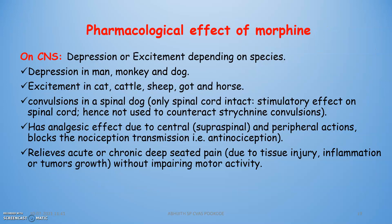Pharmacological effects of morphine on the CNS include depression or excitement depending on the species. Depression is mainly present in man, monkey, and dog, whereas excitement is seen in cat, cattle, sheep, goat, and horse. Morphine has an analgesic effect due to central and peripheral actions, blocking nociceptive transmission, and is used for controlling chronic deep-seated pain.